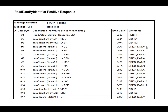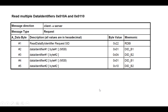For the positive response when reading multiple DIDs, you get 0x62 — since 0x40 is added to 0x22 — followed by the first DID number and its data record, then the next DID number followed by its data record, and so on for all requested DIDs.